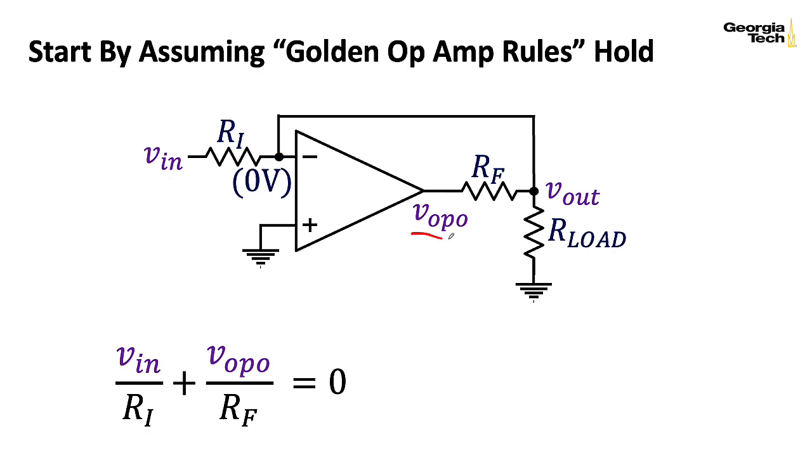So that will give me two currents that are flowing into this node. And importantly, remembering that this whole thing is actually a single node, I don't actually have to include any current coming in through our load, because Vout, if we assume these golden op amp rules, is at zero volts. So no volts are dropping across the load resistor, so I don't need a third term incorporating it.